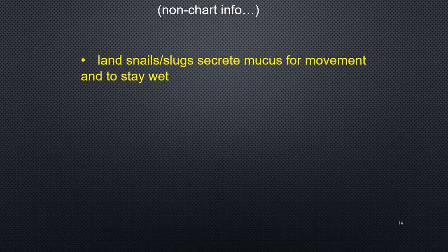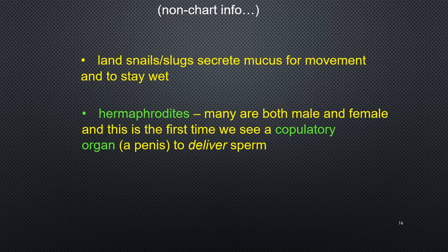Some extra non-chart information: land snails as well as slugs, which don't have a shell, secrete a mucus so that they can move along a wet surface. Our gastropods are hermaphrodites as well, but this is the first time that we actually see a copulatory organ — they have a penis to actually deliver the sperm. Remember, each grouping we look at, we want to see what kind of advancements and adaptations they have, and this is where we first see a copulatory organ.